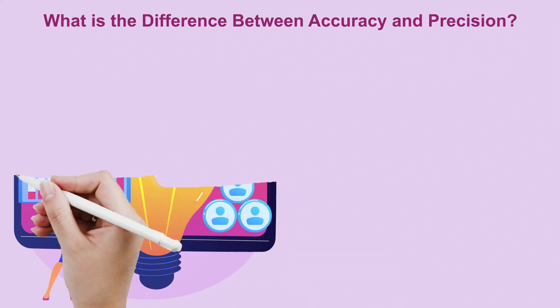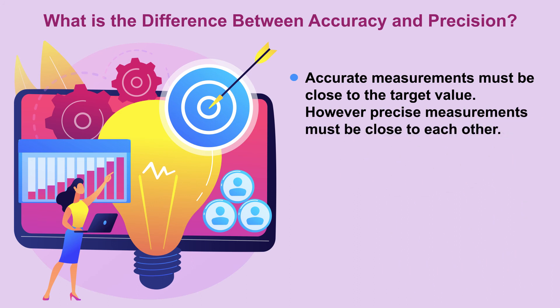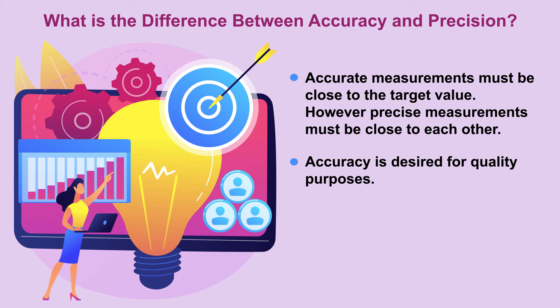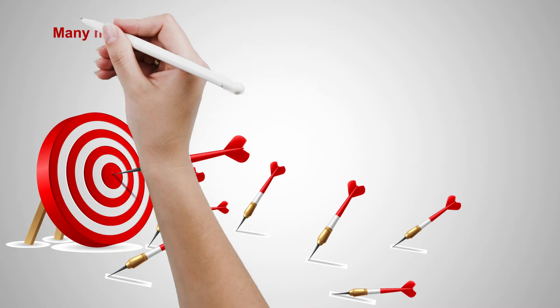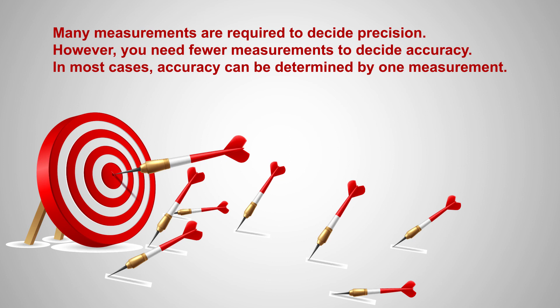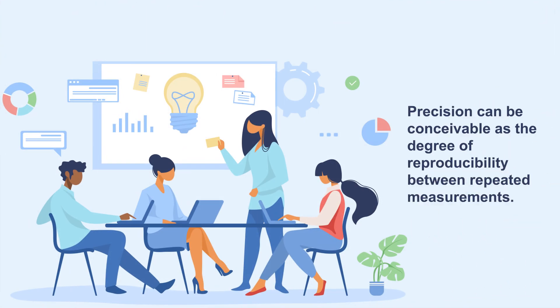What is the difference between accuracy and precision? Accurate measurements must be close to the target value, while precise measurements must be close to each other. Accuracy is desired for quality purposes. Precision is not dependent on accuracy; therefore, precise measurements may not be close to the target. Many measurements are required to decide precision, while you need fewer measurements to decide accuracy — in most cases, accuracy can be determined by one measurement. Precision can be understood as the degree of reproducibility between repeated measurements.